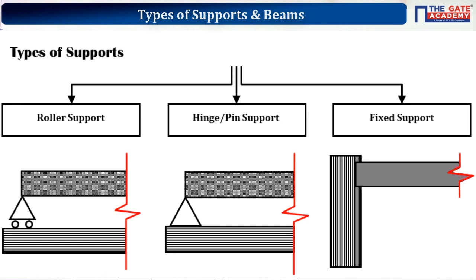Even if two beams have the same dimensions — length, breadth, height — if the types of supports differ, applying the same load will cause different bending behavior. Everything you solve for — stresses, slopes, deflections — will be different. That is why you must know the types of supports. There are three major types: roller support, hinge or pin support, and fixed support.